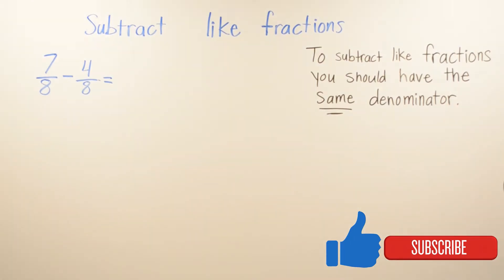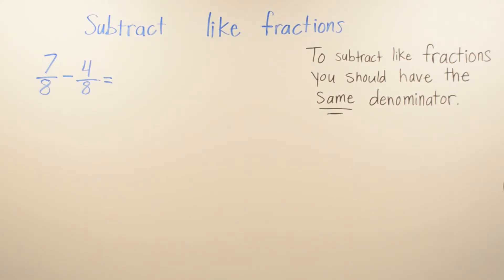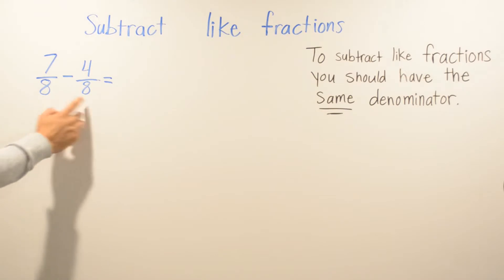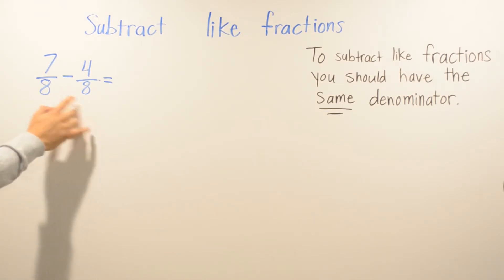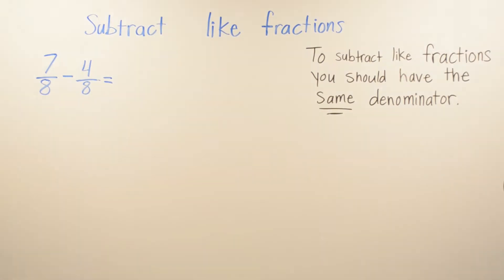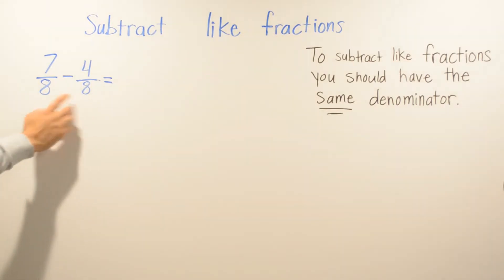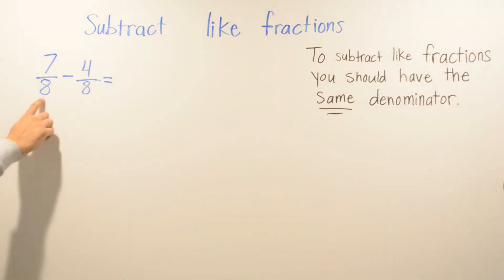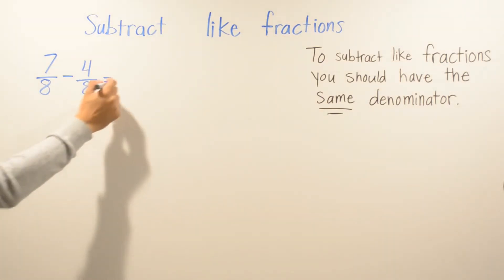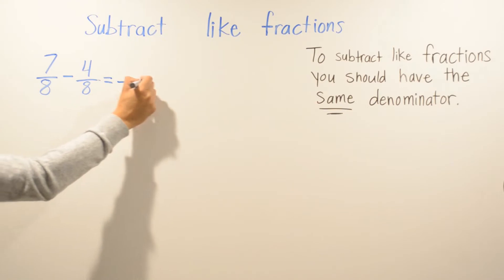In today's video we're going to be talking about subtracting like fractions. To subtract like fractions you should have the same denominator, meaning the numbers have to be the same on the bottom. If not, you cannot subtract. In this case we do have the same numbers so you can go ahead and subtract. We don't switch these numbers — the denominator always stays the same.